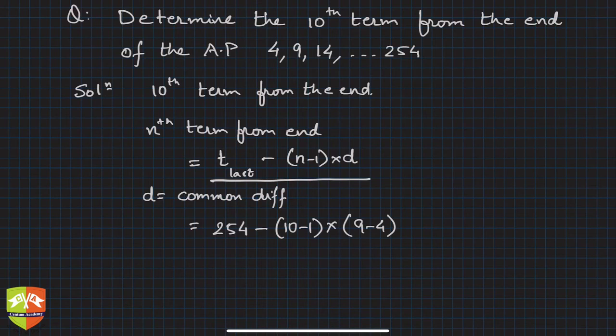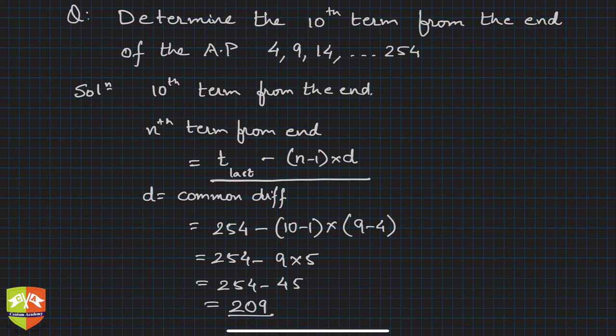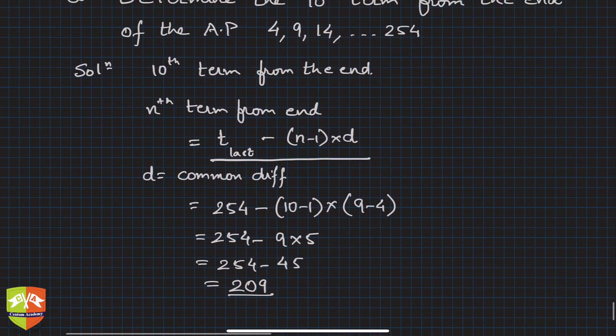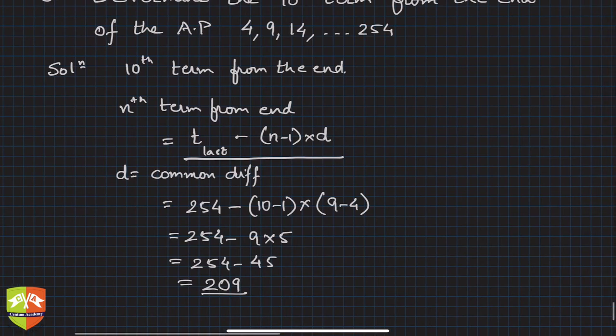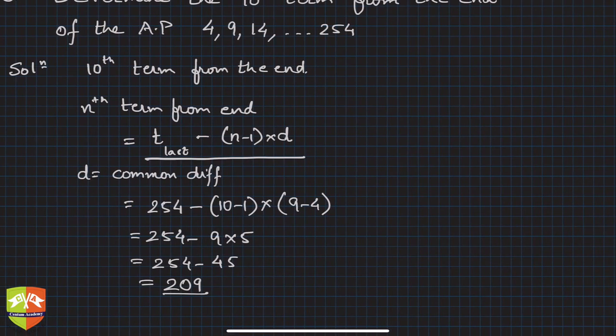So it is nothing but 254 minus 9 times 5, which is 254 minus 45, which is 209. So this will be the 10th term from last. You could have solved this in a different way, one more method.